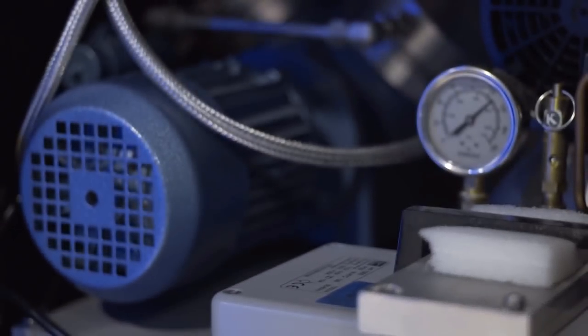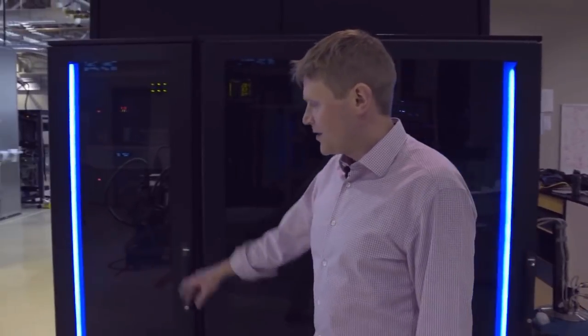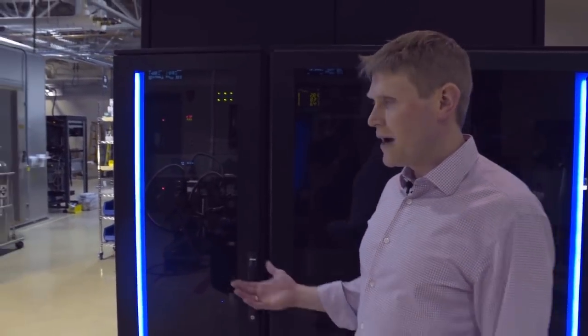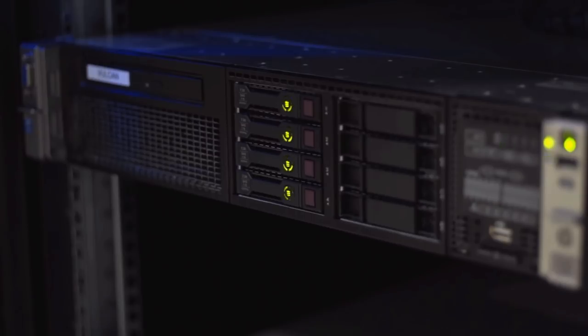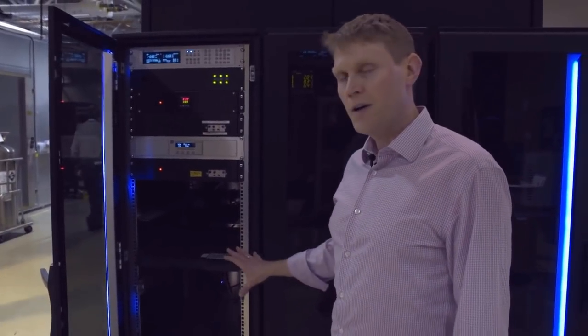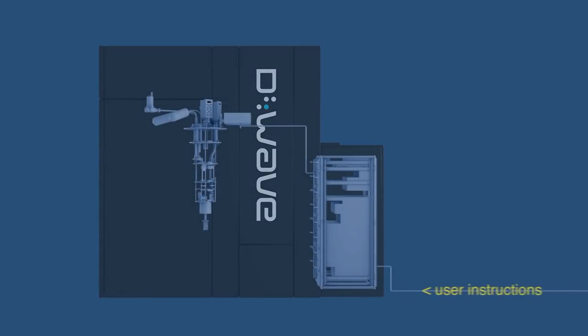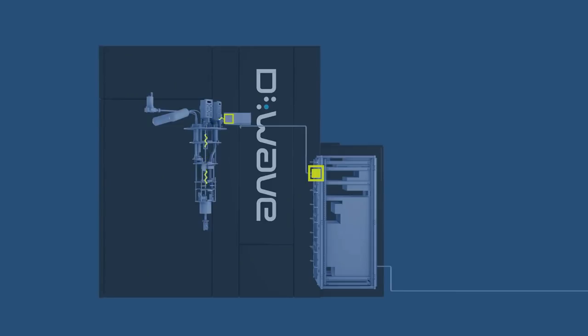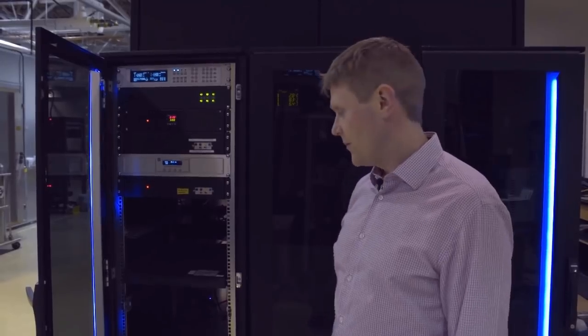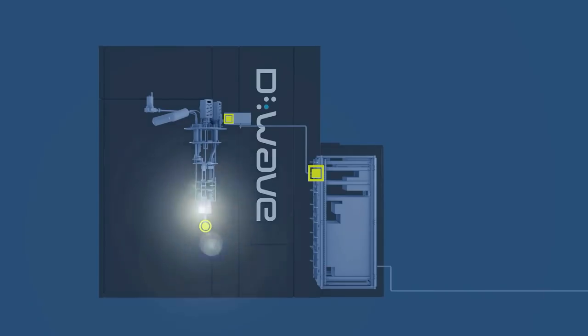In this rack is the quantum server, which allows users from anywhere in the world to interact with the processor itself. This server is receiving information from users, converting that into the machine language of the processor, and sending that machine language into the room behind where high-precision analog electronics will convert those signals into electrical pulses, which are sent through cables into the refrigerator and down through the cooling system to the ultra-low temperature of the processor. It executes its problem and then data from the processor is returned to the server and returned to the user.